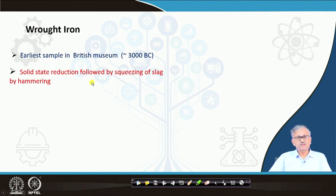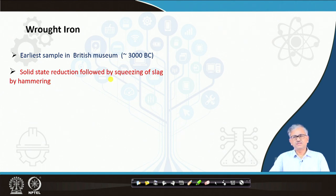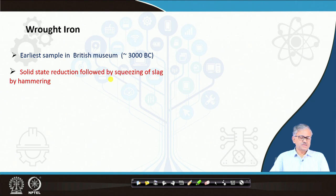So that is the solid state reduction, followed by squeezing of the slag by hammering. Basically, iron ore contains a lot of gangue. If you heat up at certain temperatures — say above 1000°C — you can do that by burning coal even in the presence of cold air. You can produce about 1000°C and then directly reduce the iron ore.